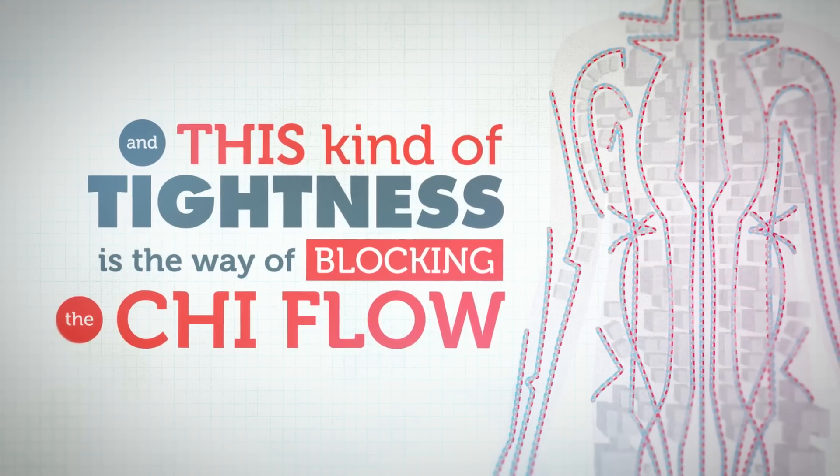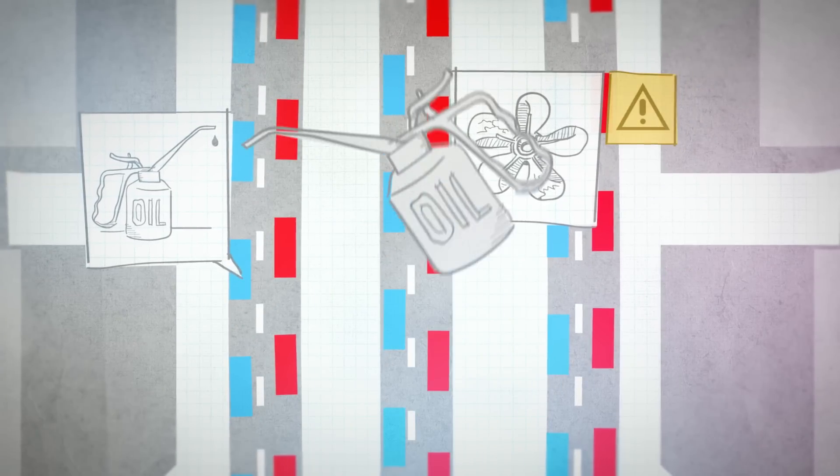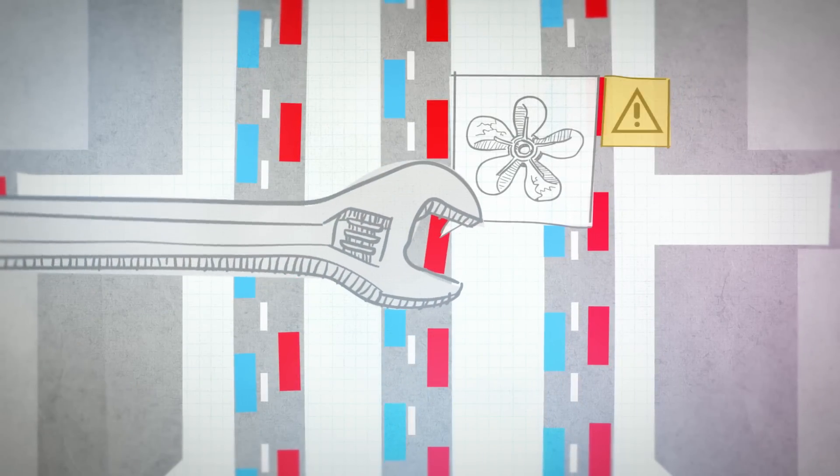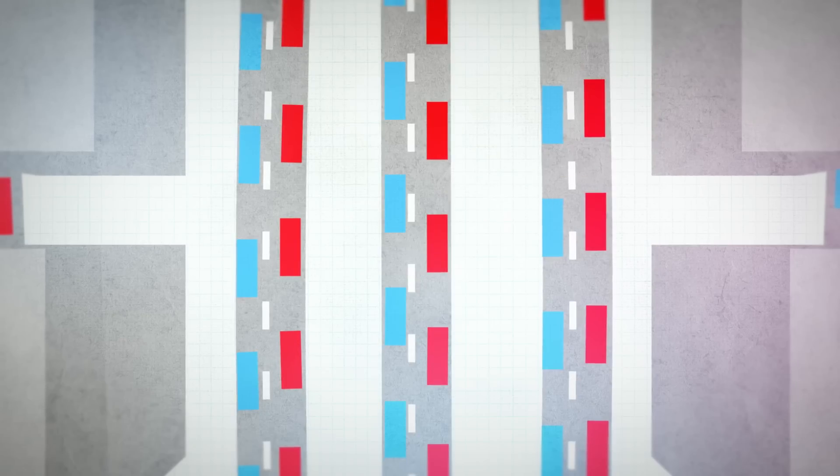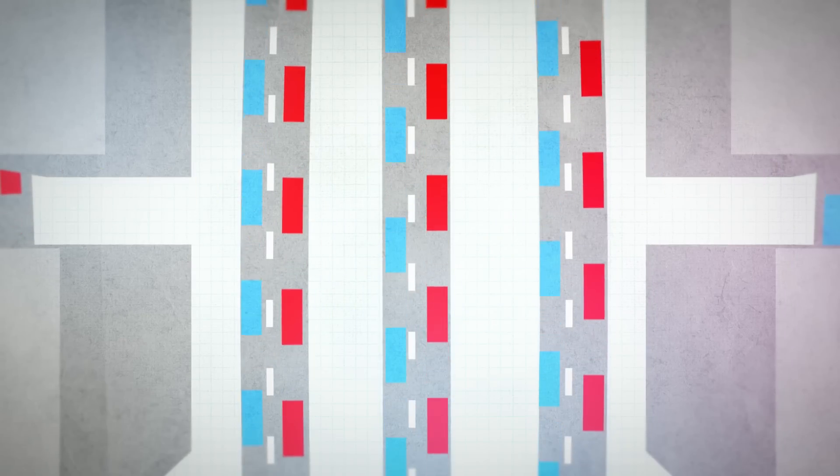To restore that, to reduce that problem, we have to put the needle into the local area to help the broken car, in a way. But also we will put needles away from the low back to divert traffic and restore the qi flow.